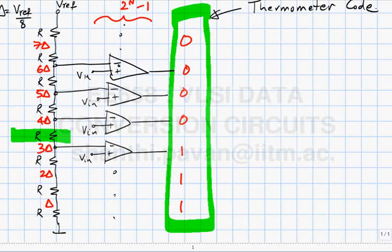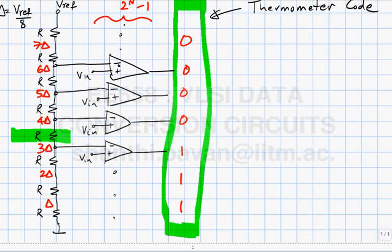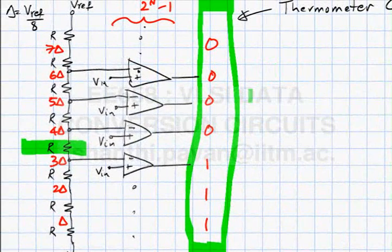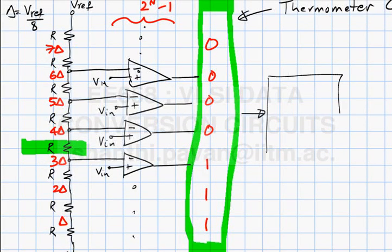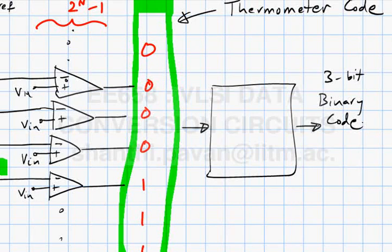It is called the thermometer code because it mimics how mercury in a thermometer behaves — if the temperature is high, the mercury rises; if temperature is low, it falls. What you actually want is not the thermometer code but a binary representation — a 3-bit binary representation of which bin the input lies in.